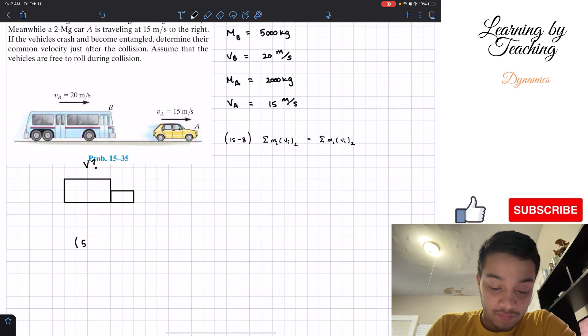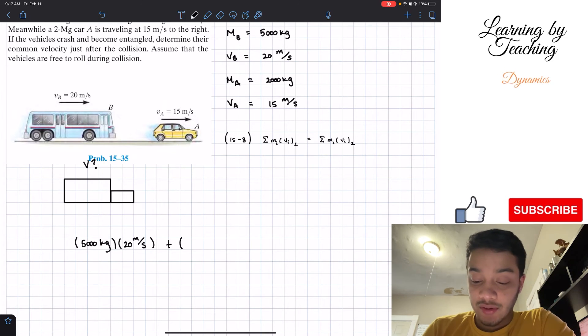5000 kilograms multiplied by the velocity of the bus which is 20 meters per second, plus the mass of the car which is 2000 kilograms multiplied by its velocity which is 15 meters per second.